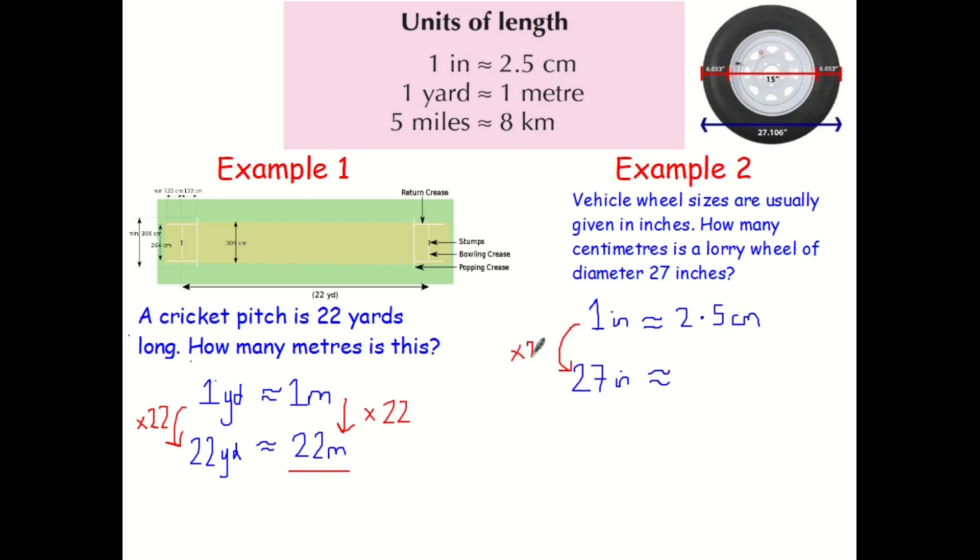Well, what have I multiplied one by to get to 27? I've multiplied it by 27. So what do I do to the other side? I need to multiply that by 27 also. So you can, of course, do this without a calculator, and that would be really great to improve your number skills and your arithmetic. But you can use a calculator on this occasion. So this gives you that the wheel diameter is 67.5 or 67.5 centimetres in diameter.